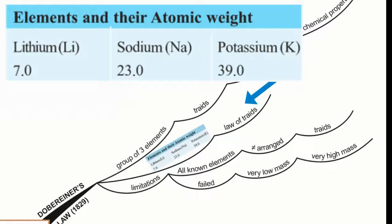the atomic weight of the middle element is the average of the atomic weights of the first and third elements. The table shows this relationship. This is called Dobereiner's law of triads.